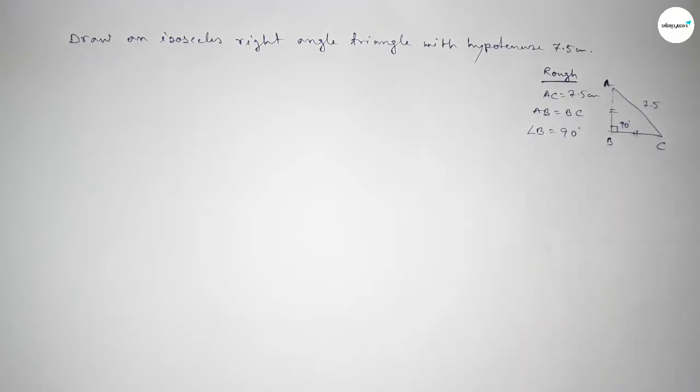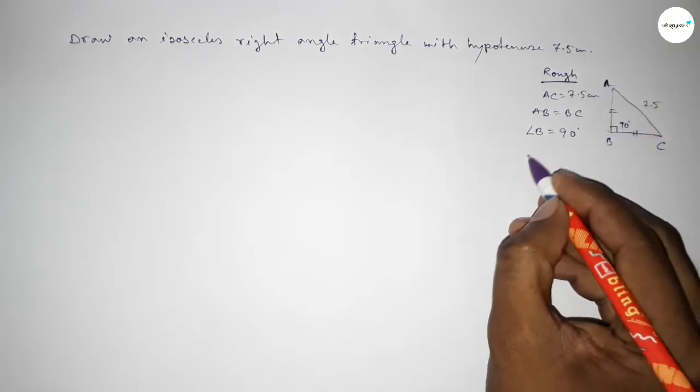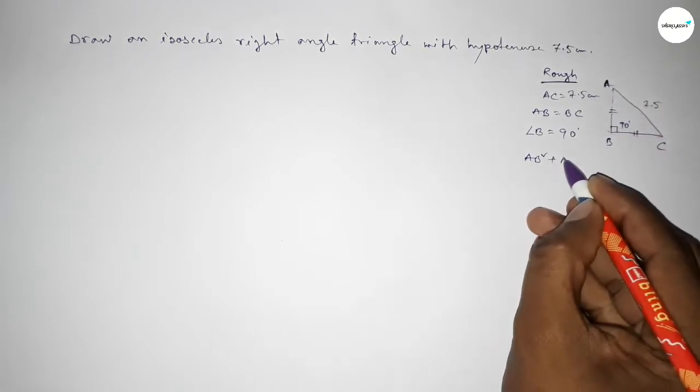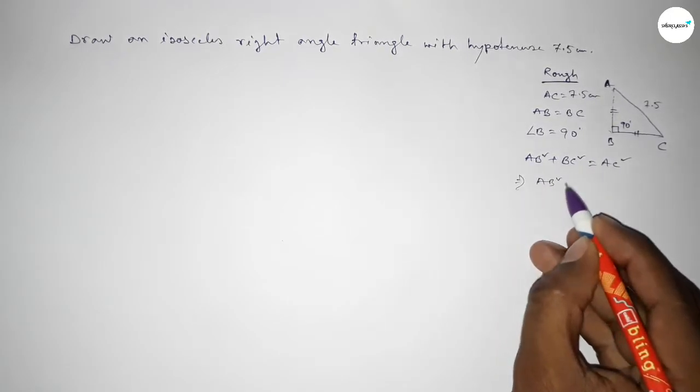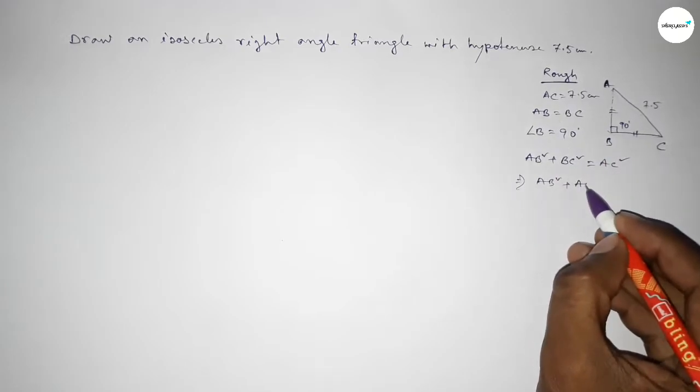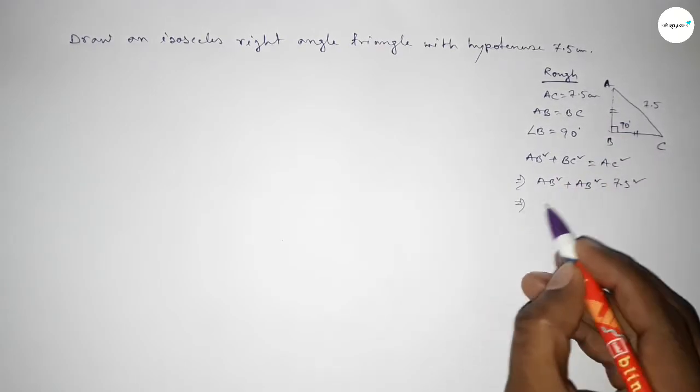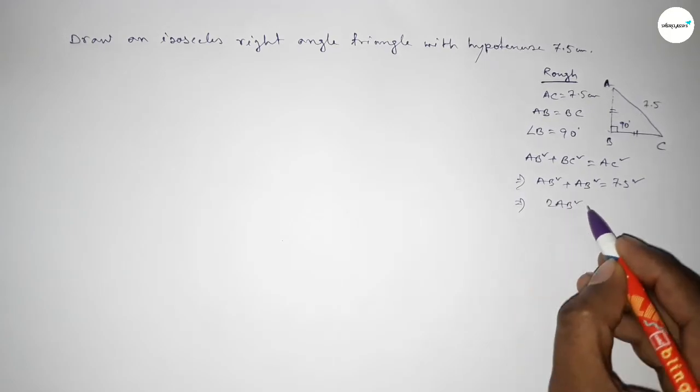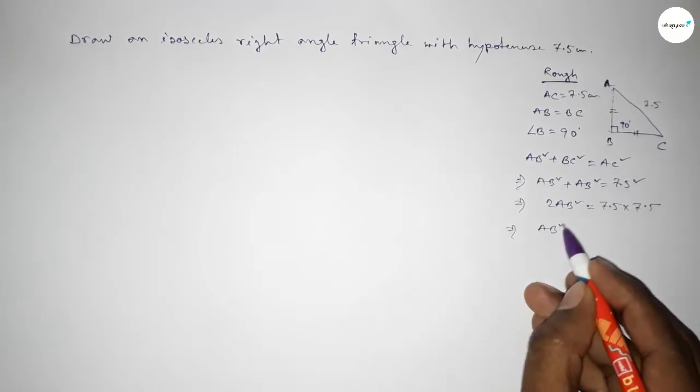Then by Pythagorean theorem, height squared plus base squared equal to hypotenuse squared. So AB squared plus BC squared equal to AC squared. This implies that AB squared plus BC equal to AB, so here AB and AC equal to 7.5 squared. This implies that 2AB squared equal to 7.5 into 7.5.